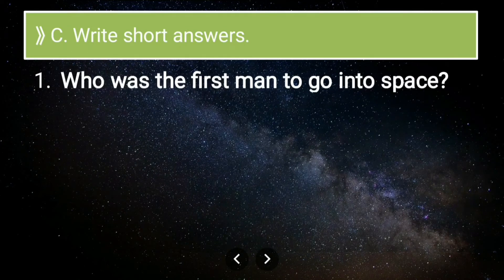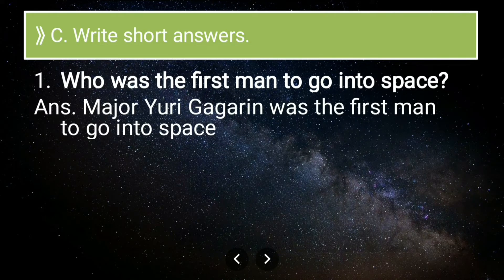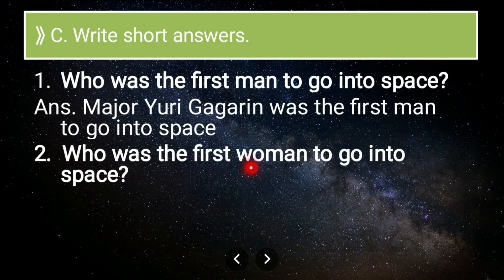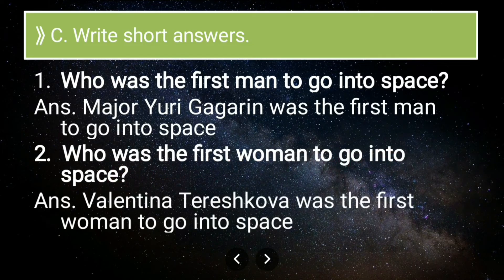Now for short answers. First question: who was the first man to go into space? The answer is Major Yuri Gagarin — he was the first person to go into space. Second question: who was the first woman to go into space? The first woman was Valentina Tereshkova.